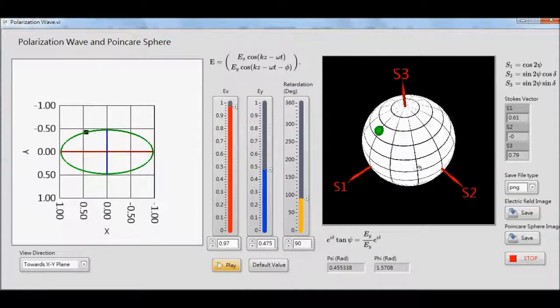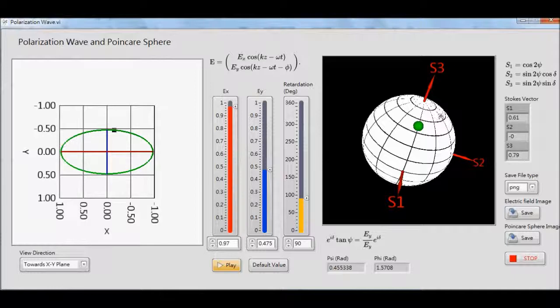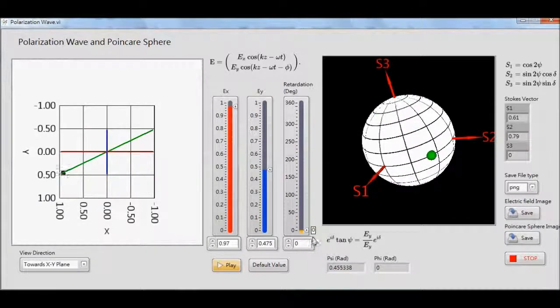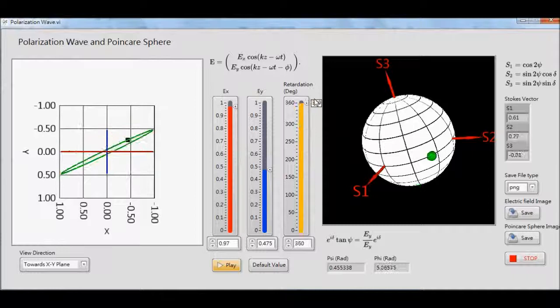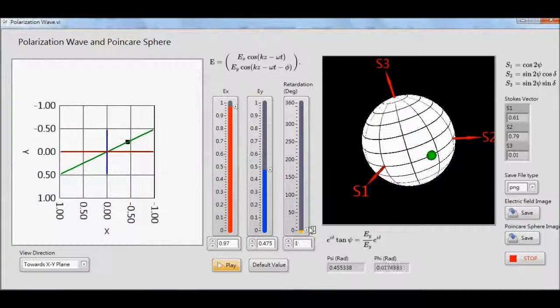The Stoke vector is also the coordinate of the state of polarization on the Poincaré sphere. Users can observe these two phenomena together and see the response by changing those parameters.